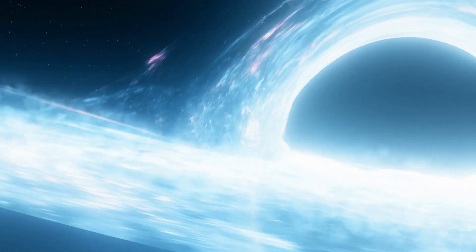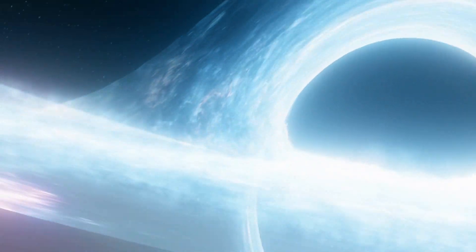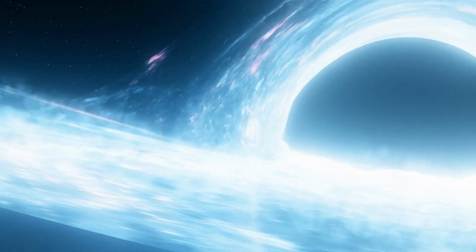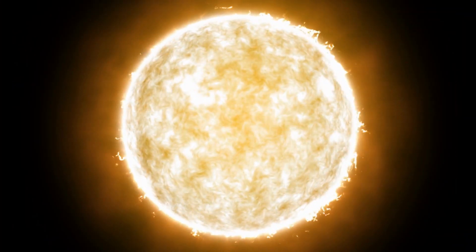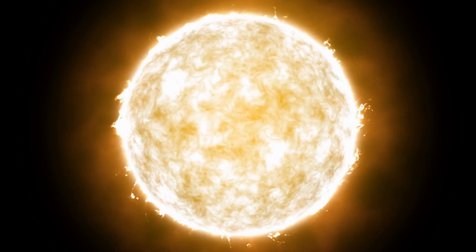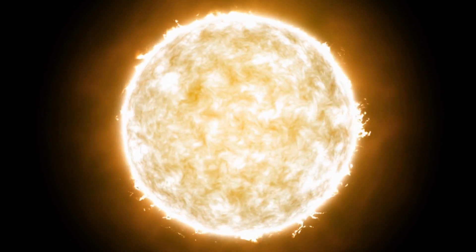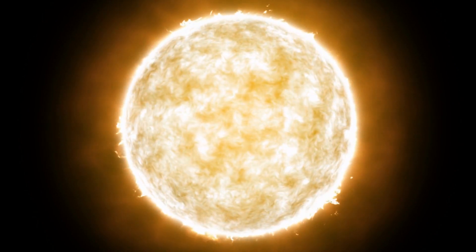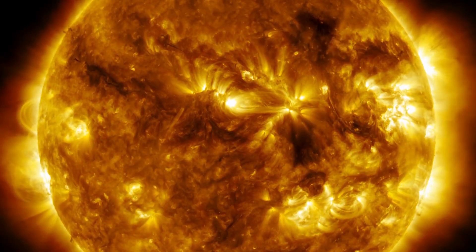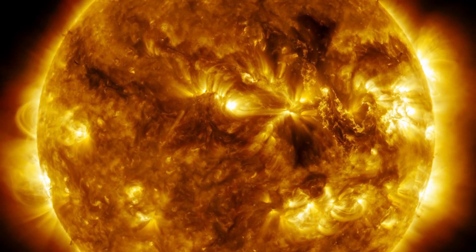To understand how black holes formed and what happens inside them, it is necessary to go back to the life cycle of a massive star. These massive stars are true cosmic powerhouses fueled by the incredible nuclear fusion reactions that take place in their cores. The sun's energy source comes from the fusion of hydrogen and helium.